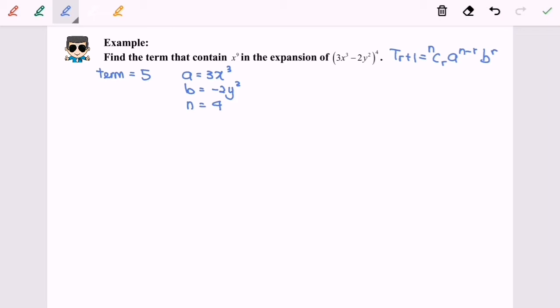So now we are going to substitute into the formula. T_(r+1) is equal to ⁴Cᵣ, a will be (3x³)^(4-r), and then (-2y²)^r.